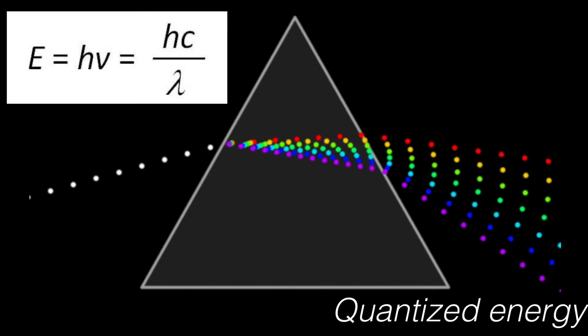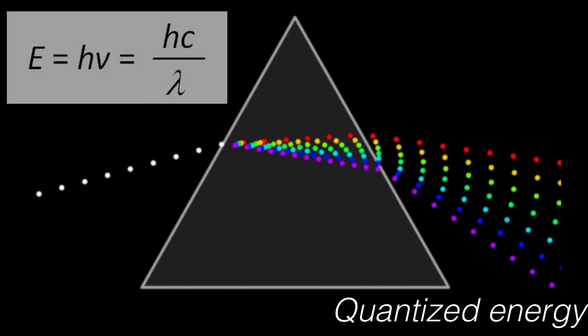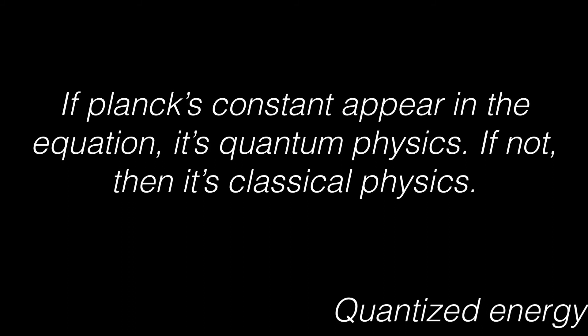And their energy is frequency times Planck's constant. So there's a rule that physicists often use to separate classical physics from quantum. Which is, if Planck's constant appears in the equation, it's quantum physics. If it doesn't, it's classical physics.